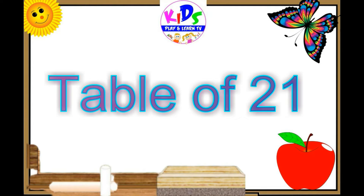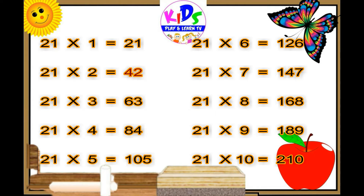Let's repeat. 21 ones are 21, 21 twos are 42, 21 threes are 63, 21 fours are 84.